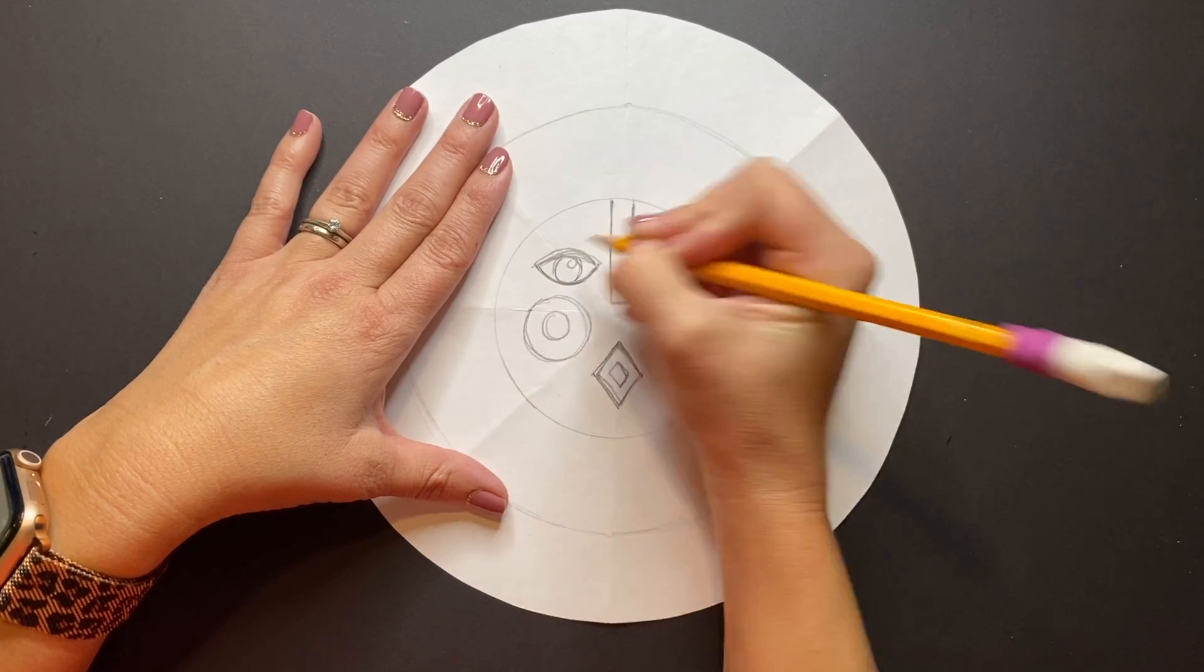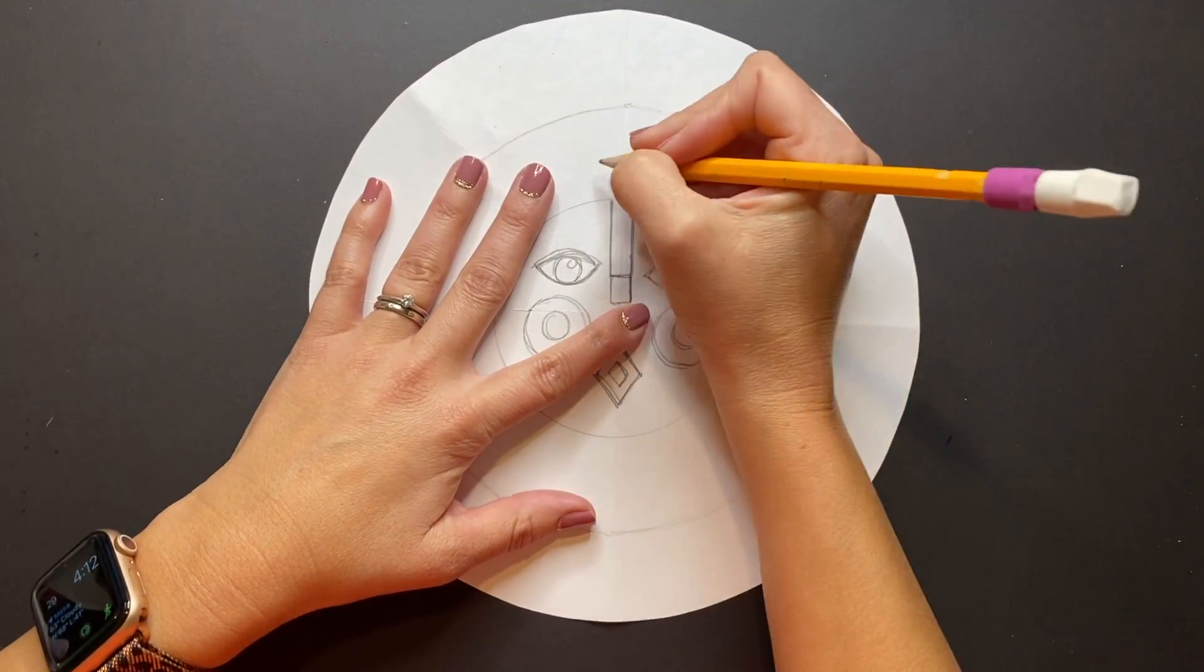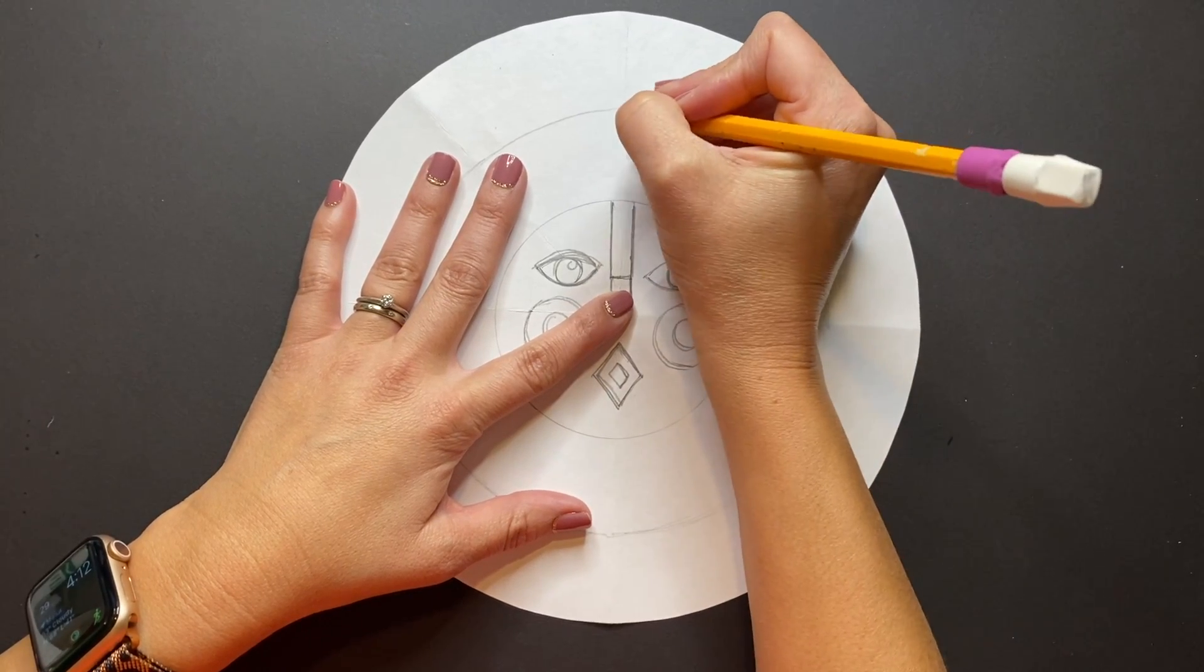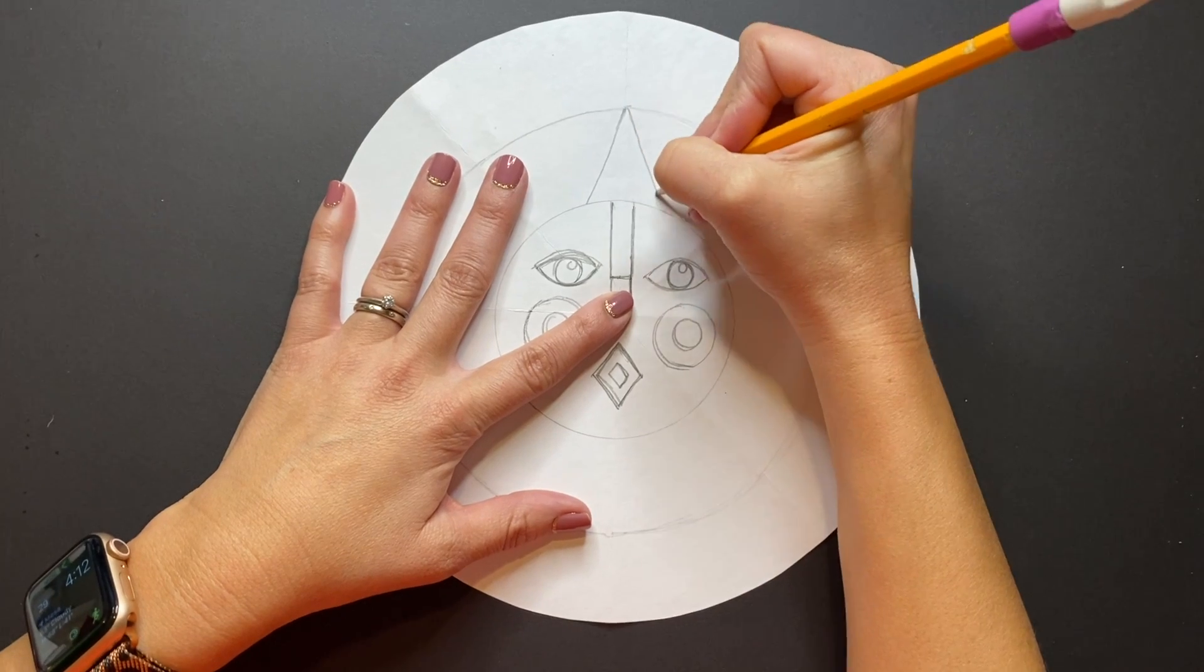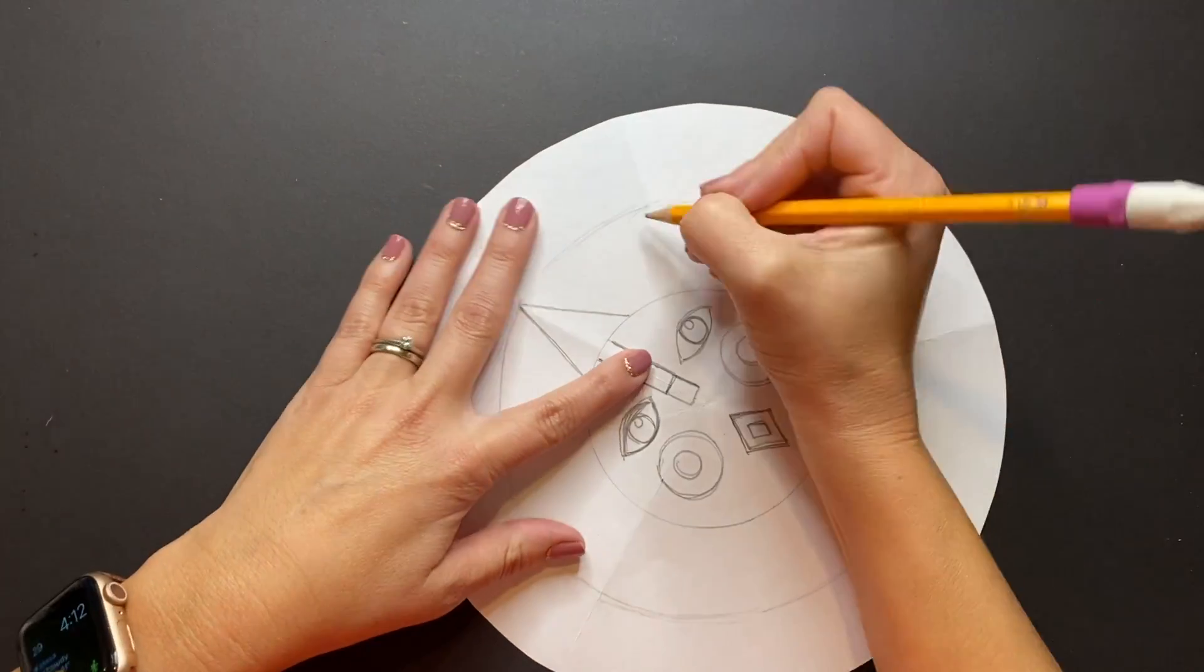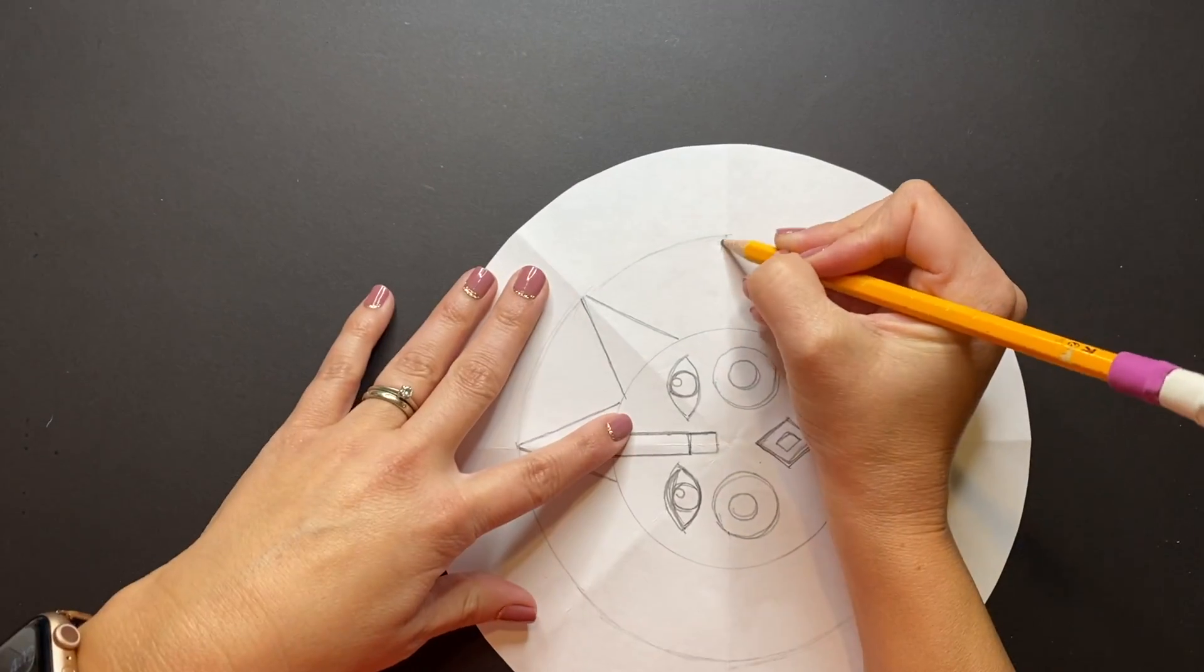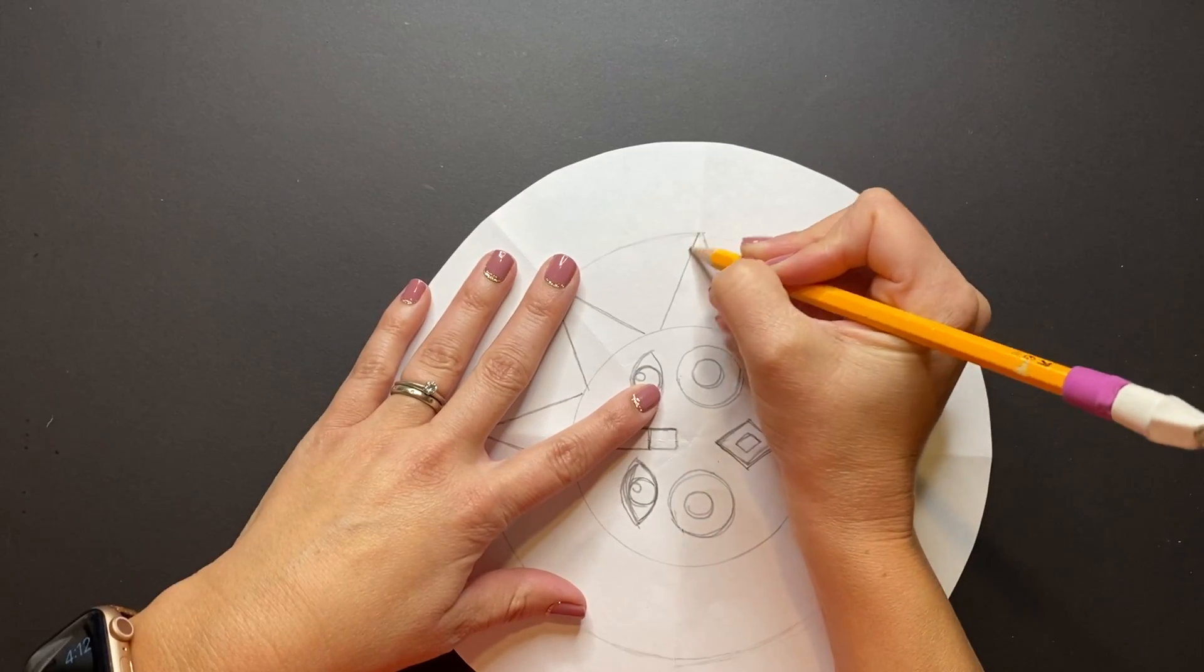Once I finished my face I'm going to move up to the sun's rays. So again, using the lines folded in my paper, I'm going to create diagonal lines almost like triangles, so I'm going to do one diagonal line on the left and one on the right creating a little triangle. I'm just going to keep moving all the way around my circle creating these triangle shapes for my sun's rays.